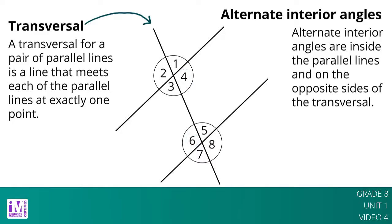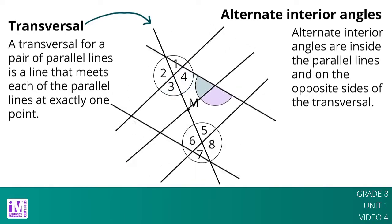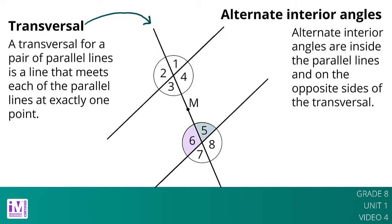Alternate interior angles are equal because a 180-degree rotation around the midpoint of the segment that joins their vertices takes each angle to the other. If we label that point M, and then rotate the three lines 180 degrees about M, we see the rotation takes angle 3 to angle 5 and angle 4 to angle 6.